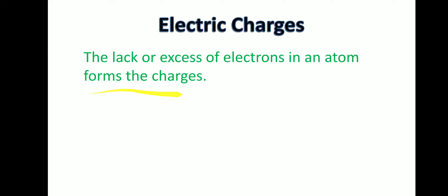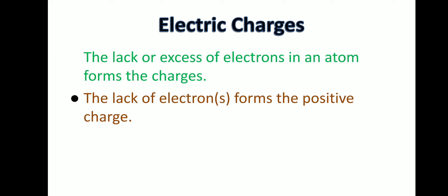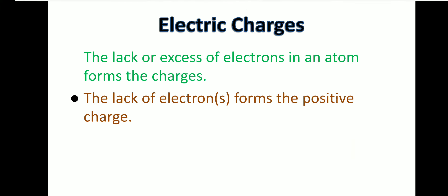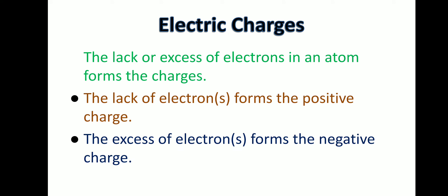The lack of electrons forms the positive charge. Lack of electrons means losing the electrons, losing the negativity, so it gets positive. On the other hand, the excess of electrons forms the negative charge. Excess of electrons means gaining the electrons, receiving the negativity — that's why it gets negatively charged.